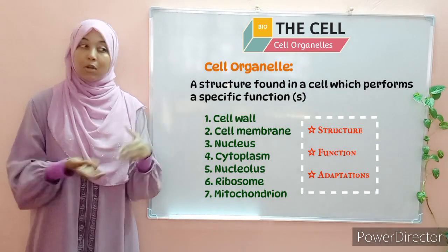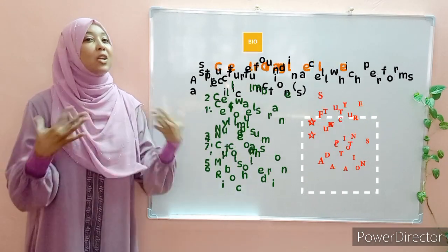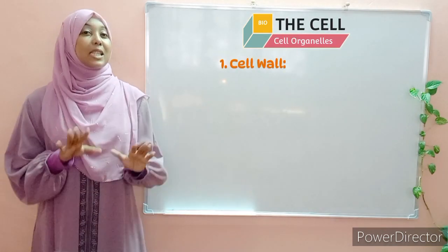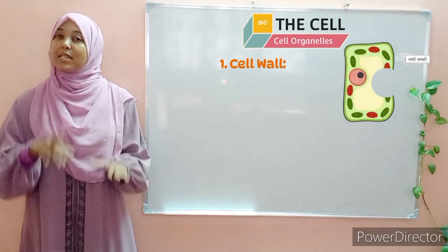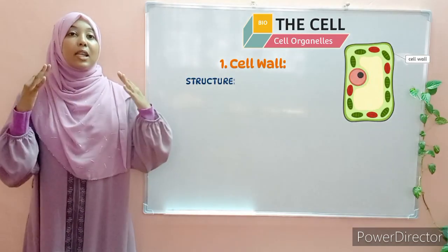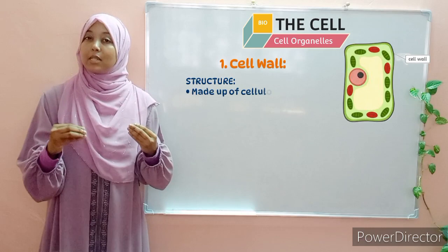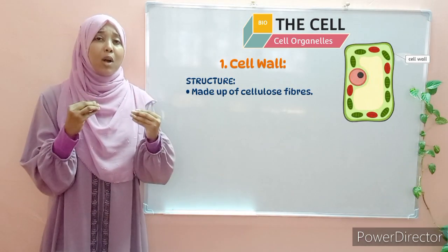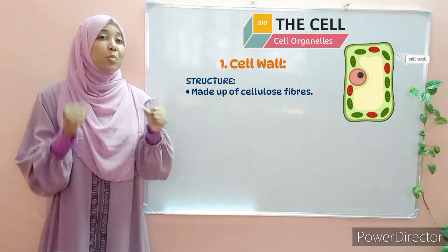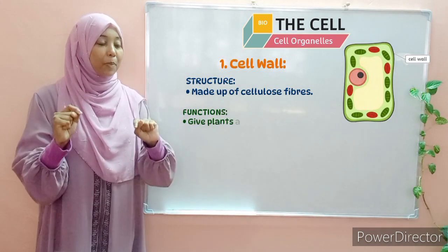If you would like to note down the points included, please kindly pause the video and do so. Our first organelle is the cell wall. The cell wall is a covering that is present in plant cells but absent in animal cells. The cell wall is made up of cellulose fibers. Cellulose is a type of carbohydrate that is complex. Because the cellulose fibers tend to be very rigid, they give plant cells their definite shape.